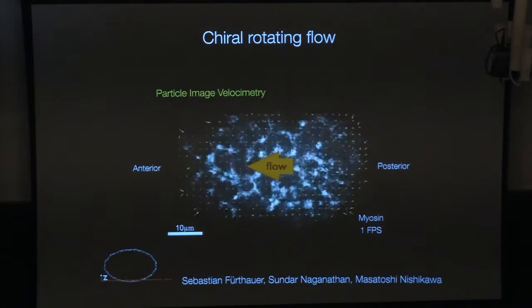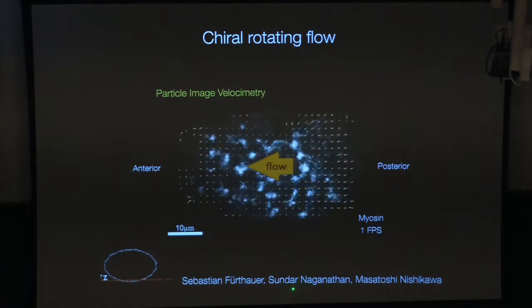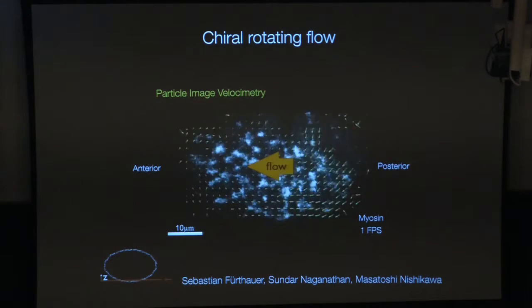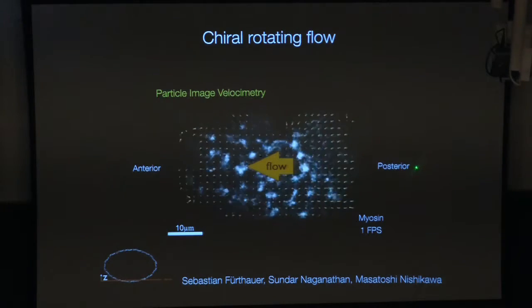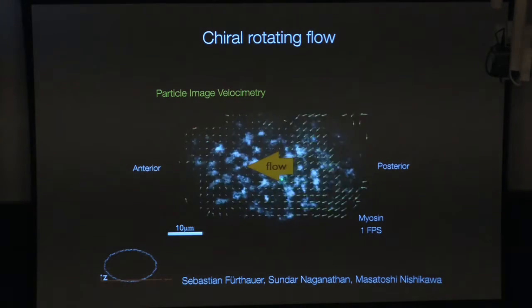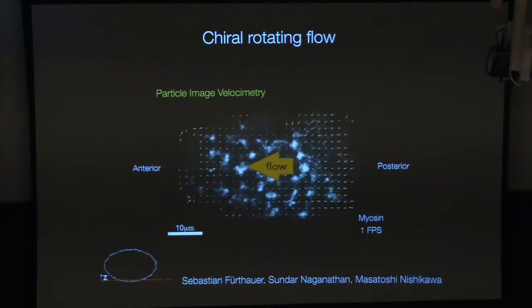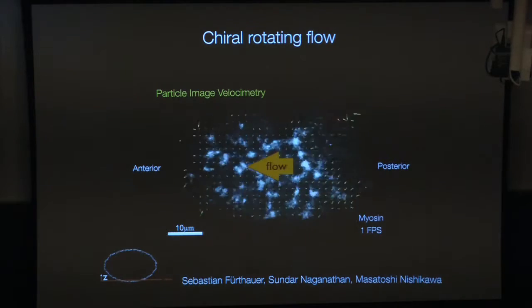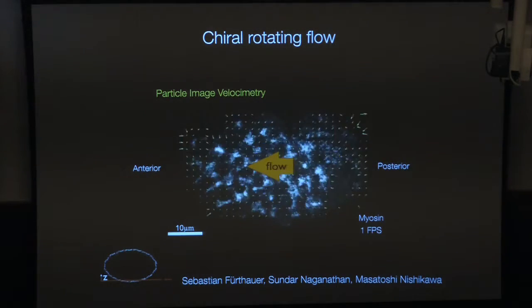This project started a couple of years back when Sundar — who's also in the audience — joined the lab, along with Sebastian, a shared PhD student between myself and Frank Jülicher. They started working on this problem: that flows, if you look at the situation — I gave you a 1D picture of flows proceeding from posterior towards anterior — but here's an embryo where it's not quite right. There's a Y-component to the flow field. In fact, if you look from the posterior, this flow field is counterclockwise. The remarkable thing is that each and every embryo breaks chiral symmetry — the flow field has the same handedness in each and every embryo.